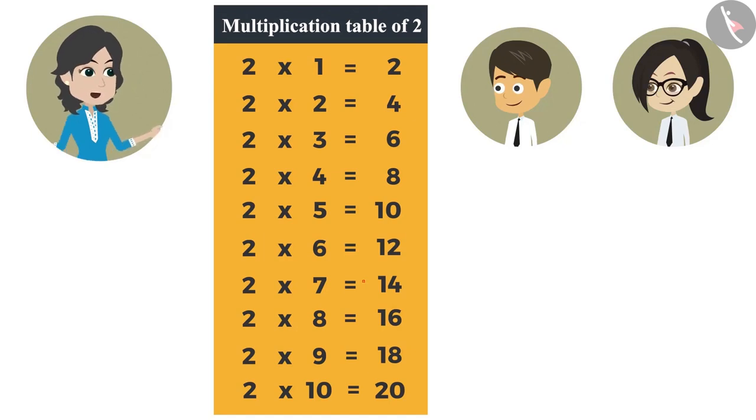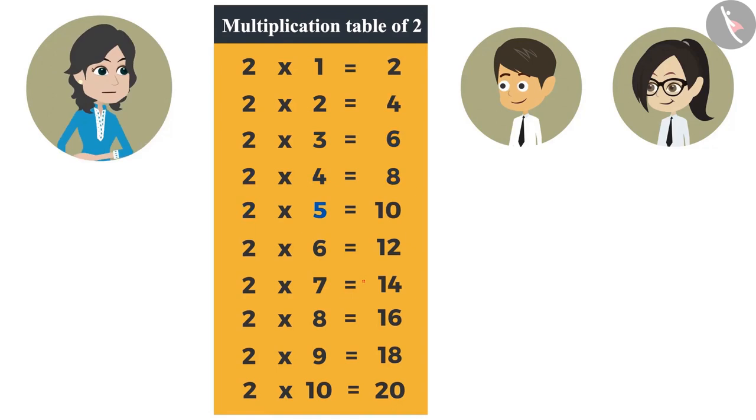We remember the table of 2 like this. 2 x 1's are 2, 2 x 2's are 4, 2 x 3's are 6, 2 x 4's are 8, 2 x 5's are 10, 2 x 6's are 12, 2 x 7's are 14, 2 x 8's are 16, 2 x 9's are 18, 2 x 10's are 20.